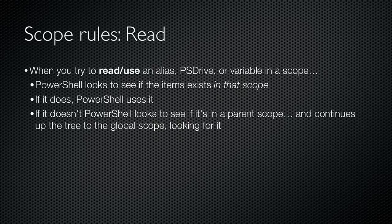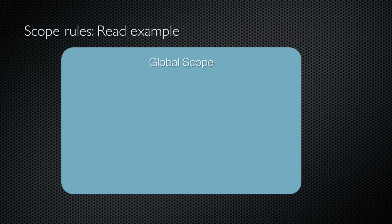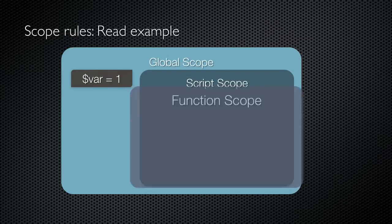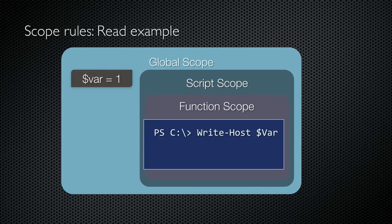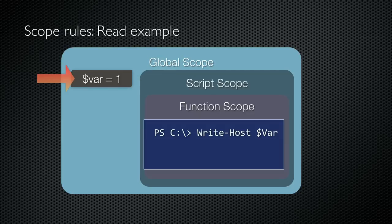Another way to think about this is to say that child scopes inherit their items from their parents. So here's the global scope, in which I've created a variable named var and set it equal to one. I then run a script, and inside that script is a function. Inside the function, I write the contents of var. Now PowerShell needs to find what's in var, so it first looks in the function to see if var exists. It doesn't exist there, so the shell goes to the function's parent, which is the script. It doesn't find it there either, so it goes up one last level to the shell where it finds the variable. That variable is read, and that is what the function is really accessing.